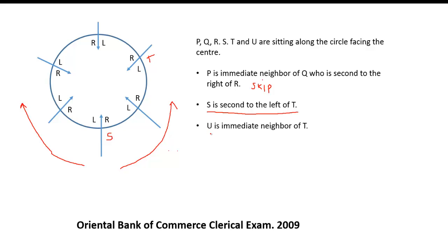The third condition is that U is an immediate neighbor of T. U can be here or U can be here because both these are the immediate neighbors of T. We don't know whether it is to the left hand side or to the right hand side, so from this also we cannot fix the position of U. Again presently we will skip this and go back to the first condition.